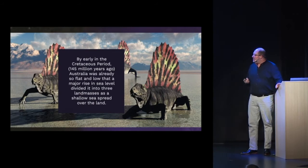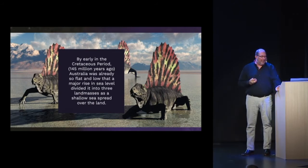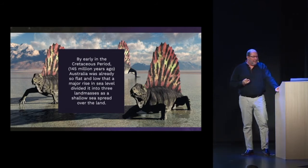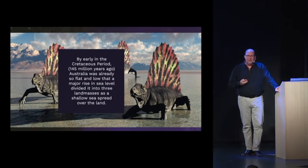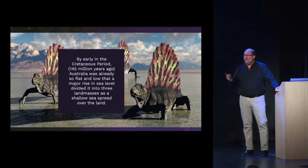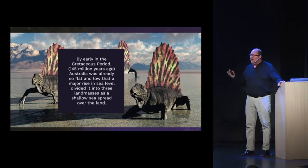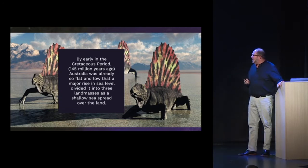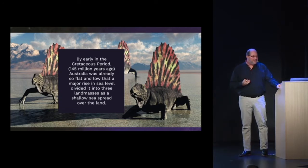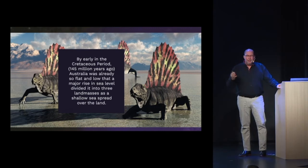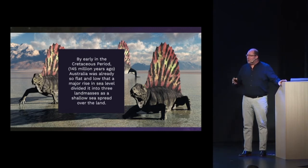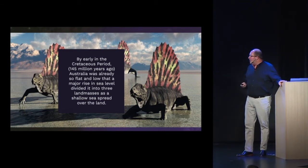By the early Cretaceous period, Australia was already so flat and so low that a major rise in sea level divided the country into three land masses, and people were able to cross much later using these shallow seas.